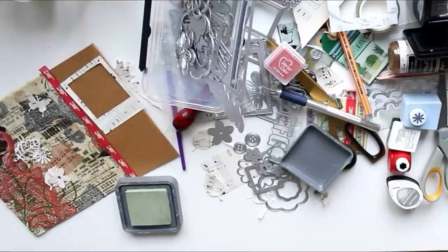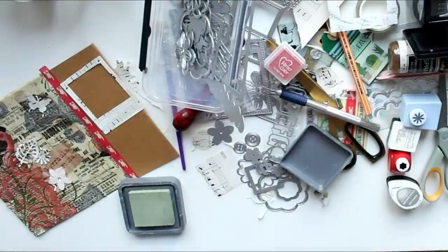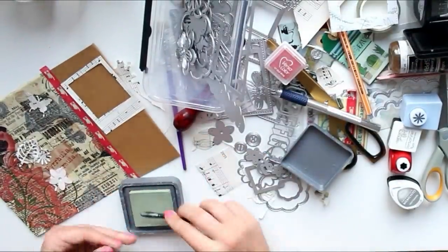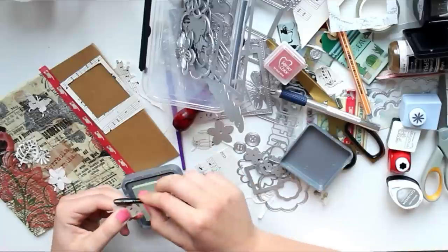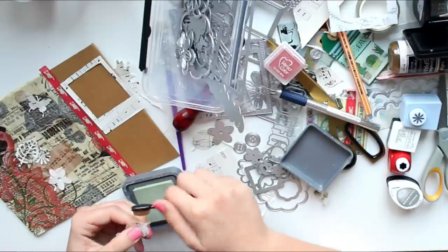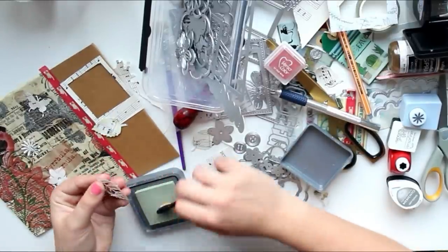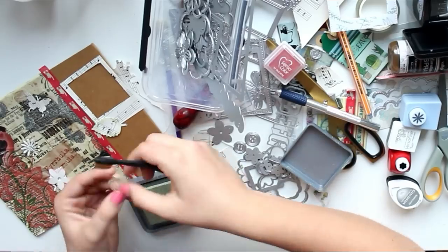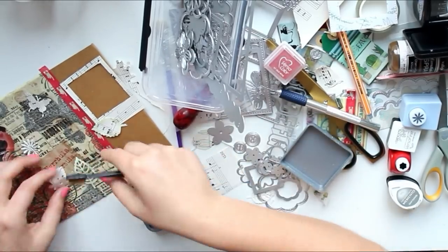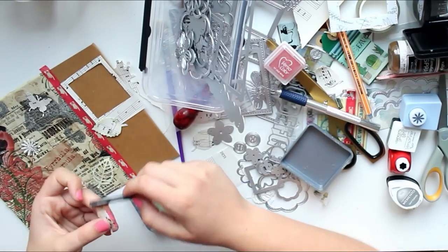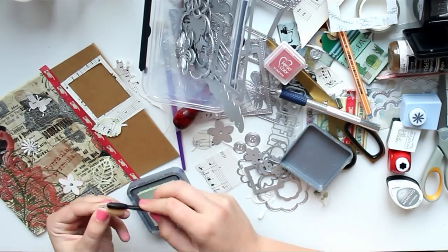I'm also going to use my distress oxide to really lightly color in the edges of the leaves as well, because I did like the simple clean look of those music paper die cuts, but I did want to make them a little bit more special by adding some color to them.